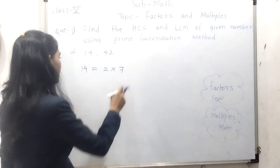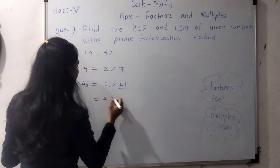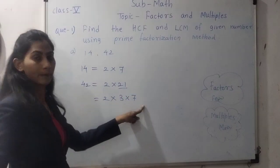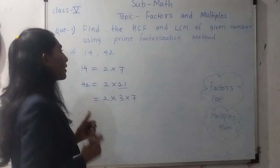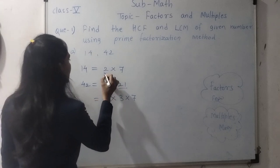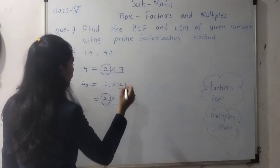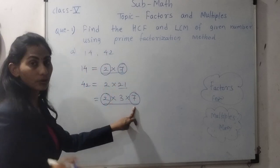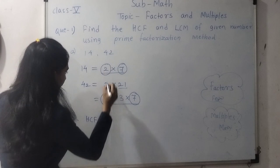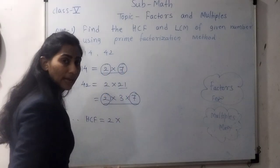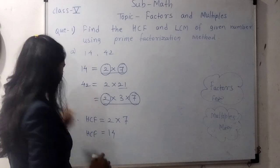For 42: we can write 42 = 2 × 21, and 21 = 3 × 7, so 42 = 2 × 3 × 7. And 14 = 2 × 7. Now we identify the common factors in both numbers. Here, 2 and 7 are common to both. To find the HCF, we write each common factor only once: 2 × 7 = 14. So the HCF is 14.